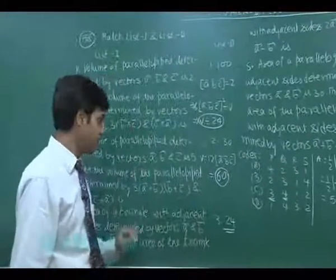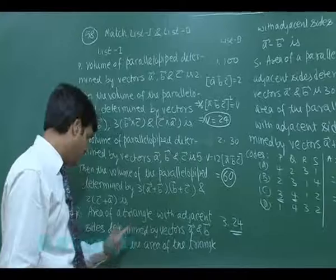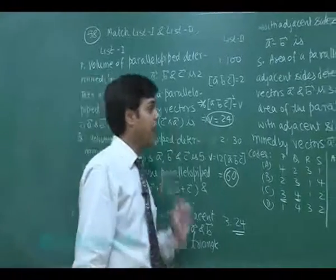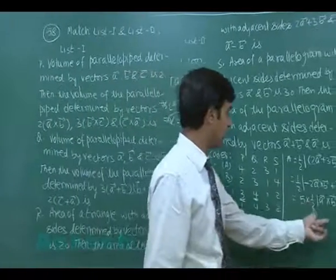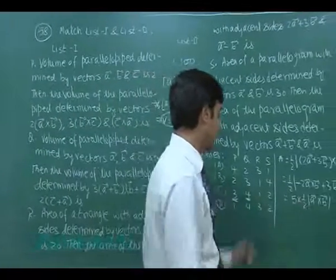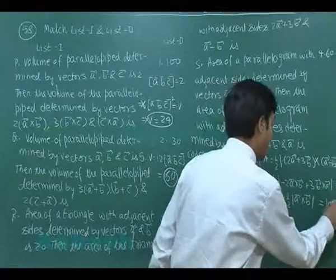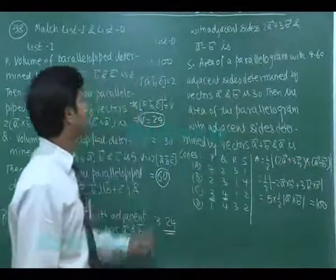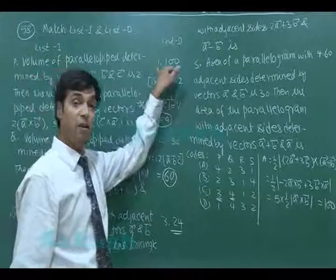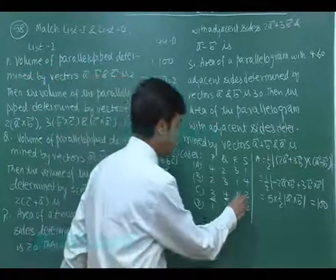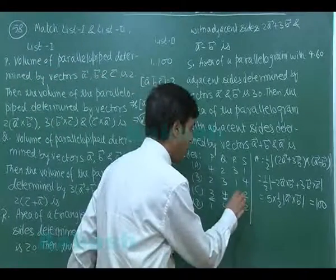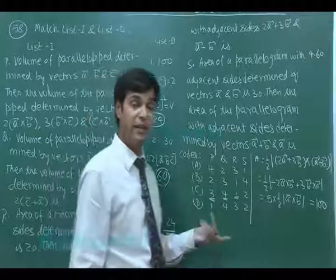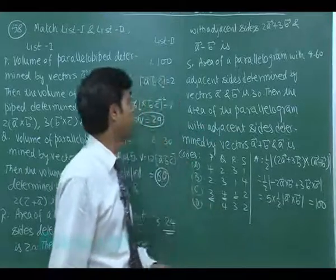Since ½|a×b| is the area of the original triangle, which is given as 20, the result is 5 × 20 = 100. So R matches to option 1 (hundred) from list two. We are solving all four to verify, even though we already determined the correct option from the first part.